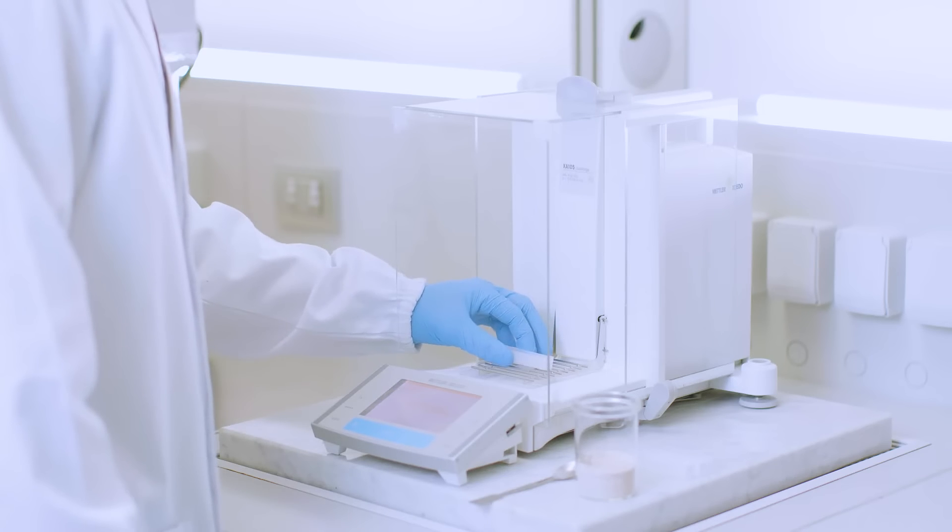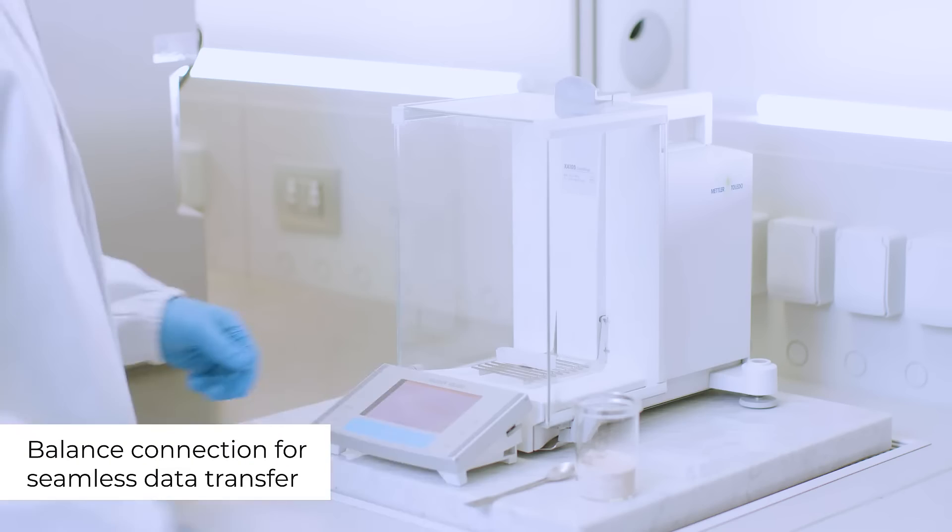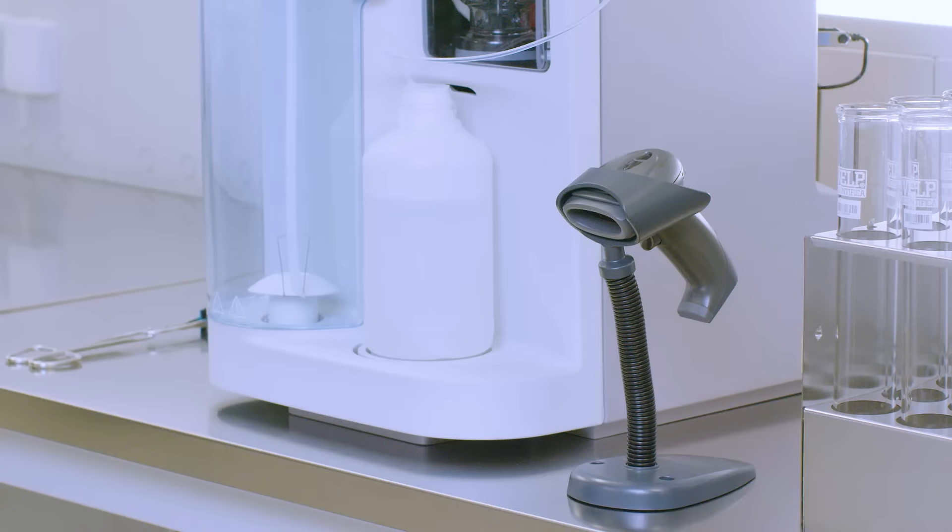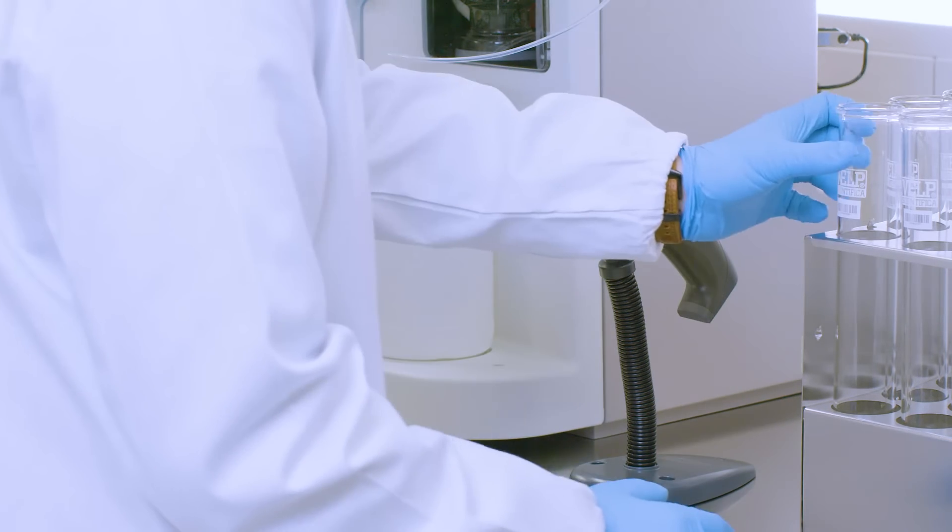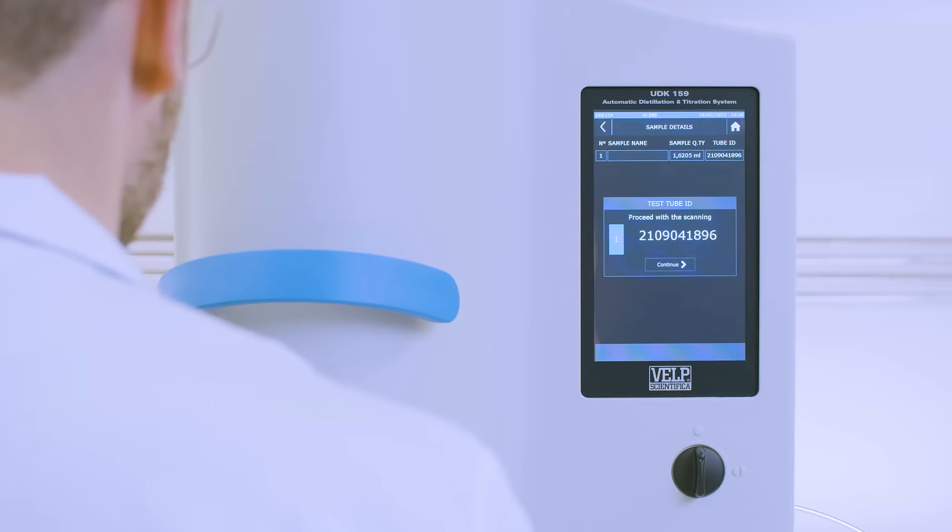To start, homogenize the sample and transfer it into a VELP test tube. Connect the UDK-159 to a balance for seamless data transfer. The optional barcode reader simplifies data management and speeds up the analysis preparation, avoiding transcription errors.